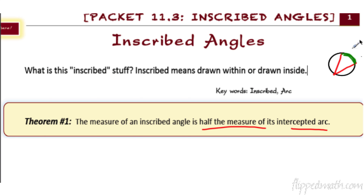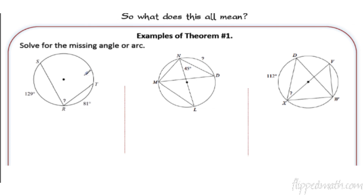For example, if this arc were 80 degrees, then we know that the angle would equal 40 degrees. It's that simple. That's all we have to do. So let's do some examples.